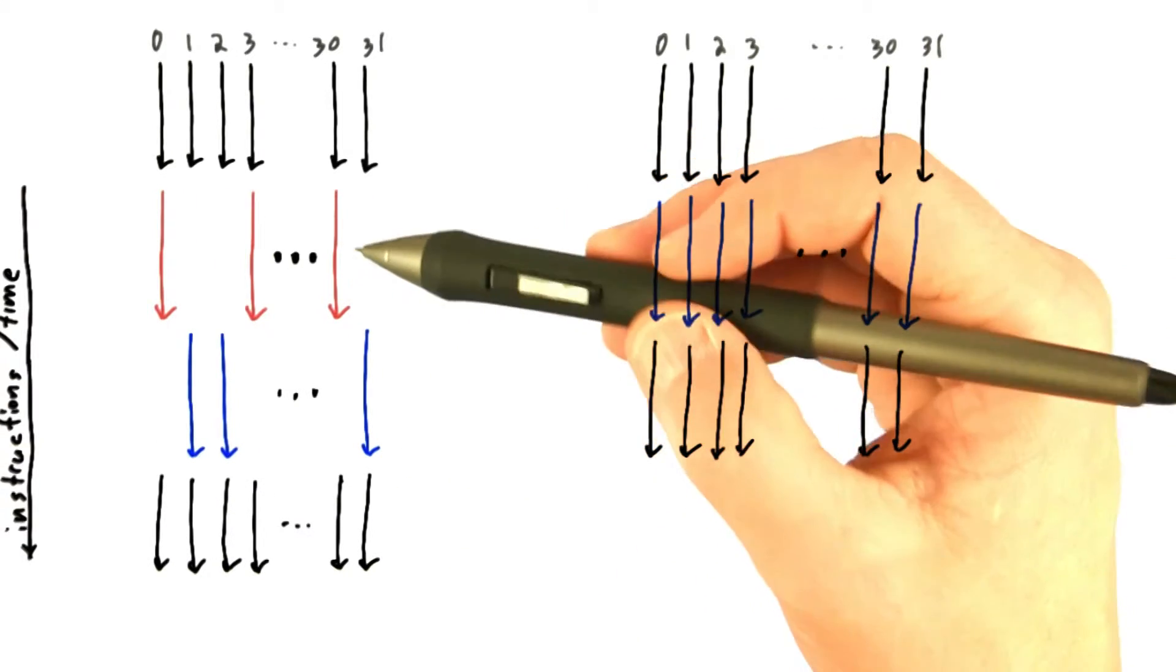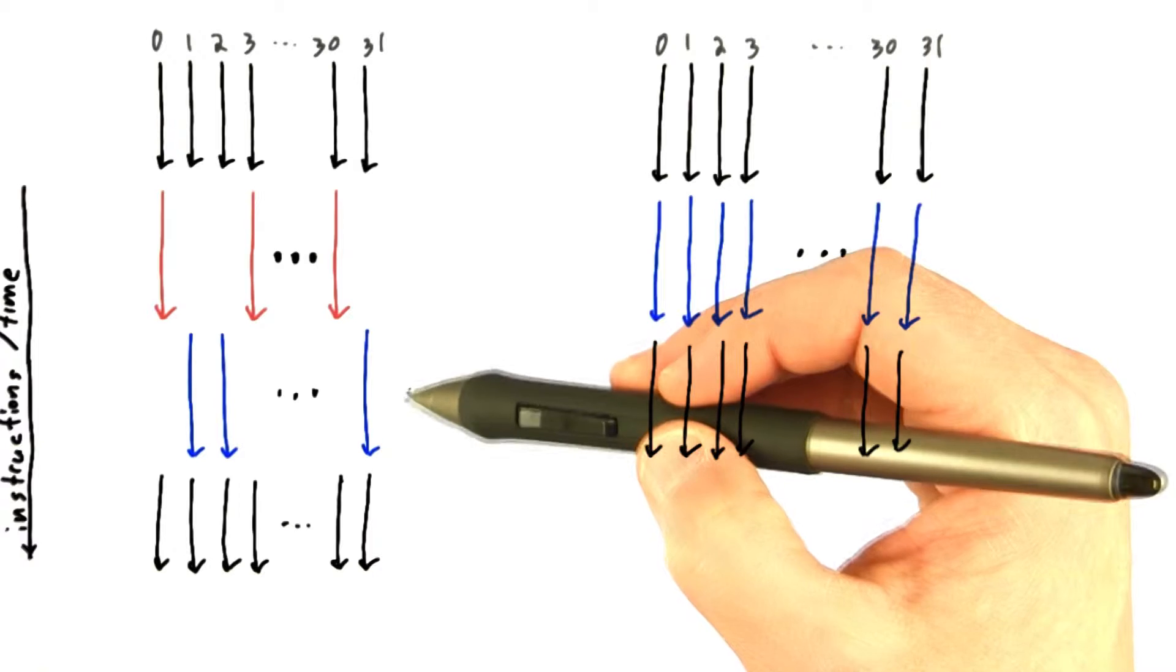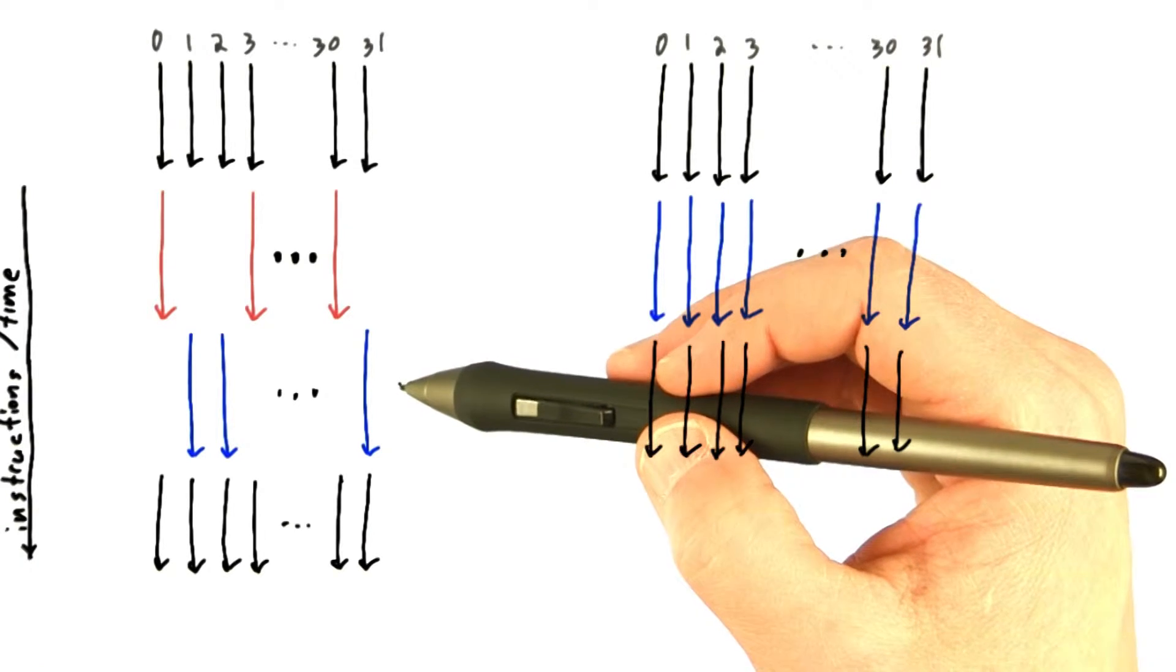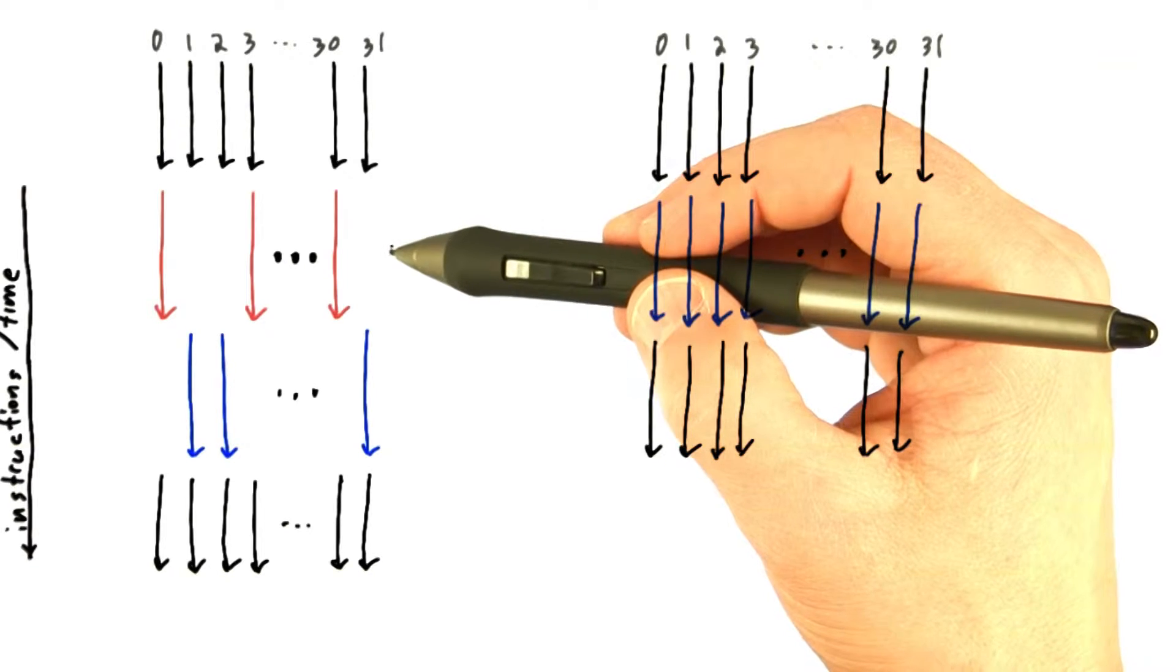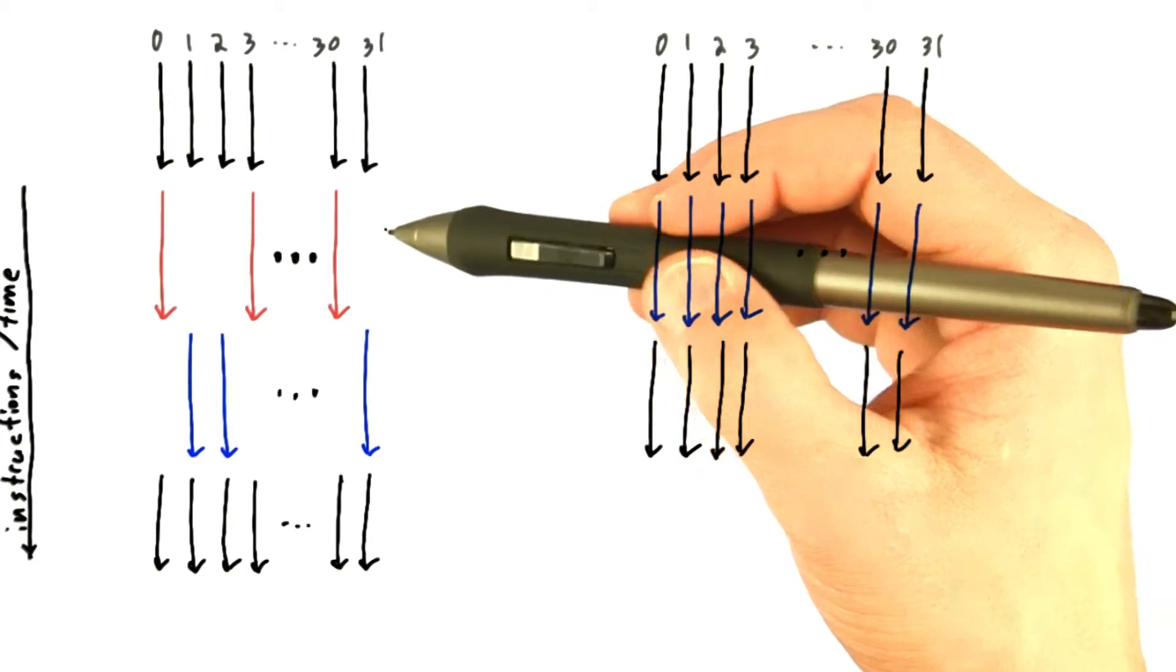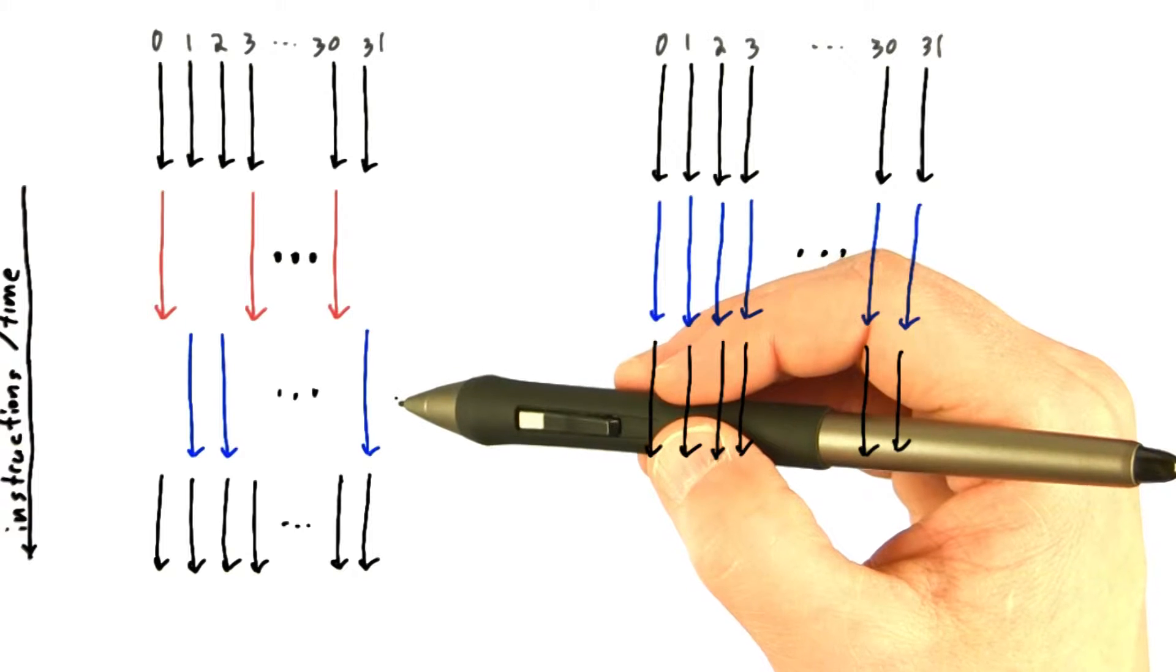But here's a warp where some threads take the if branch and some take the else branch. And because the threads in a warp can only execute a single instruction at a time, the hardware automatically deactivates some of the threads, executes the red instructions, then flips which threads are activated, and executes the blue instructions.